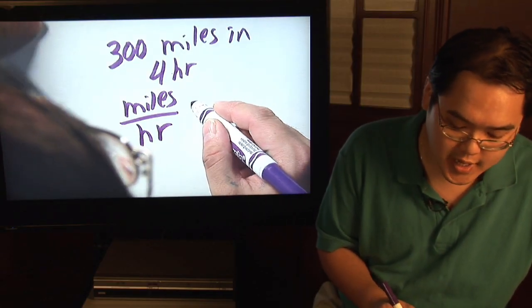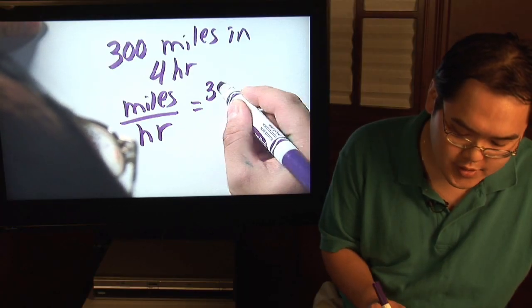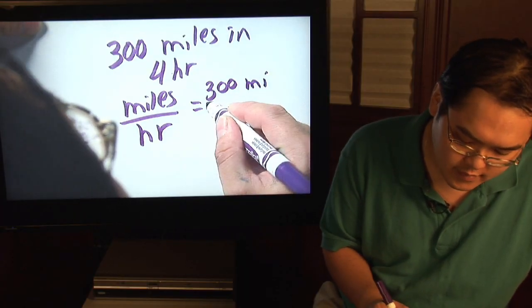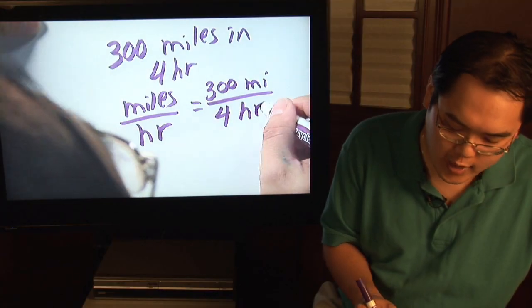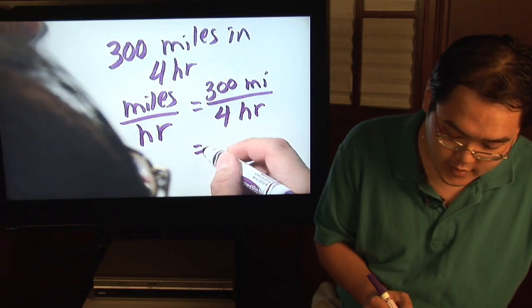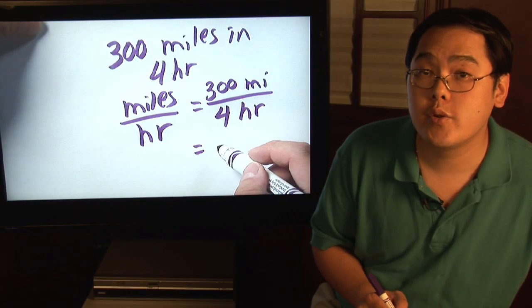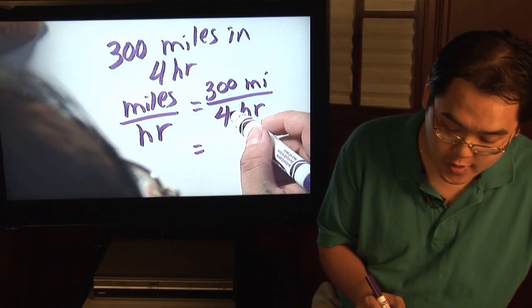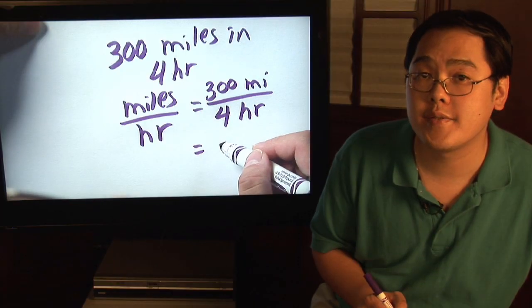So basically in this case you've driven 300 miles over four hours and then you divide the two numbers. Now four actually does go into 300 evenly, so four goes into 300 as a matter of fact 75 times.